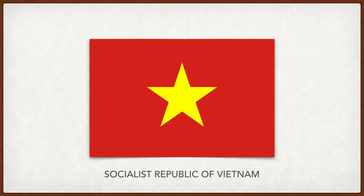Vietnam. The red symbolizes the communist revolution, and the yellow star represents the Vietnamese people, specifically in five classes: intellectuals, farmers, workers, businessmen, and military.